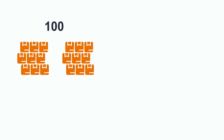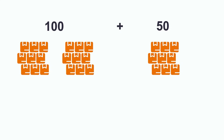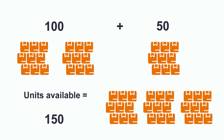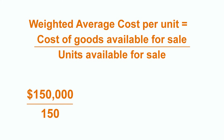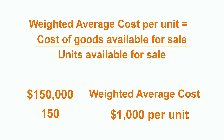For example, if the company had 100 units in inventory at the beginning of the month and purchased another 50 units during that month, their units available for sale would be 150 units. If we go back to our weighted average cost formula and take the $150,000 cost of goods available for sale and divide it by the 150 units available for sale, this gives us a weighted average cost of $1,000 per unit. This means that even though some of the individual pieces of inventory may have cost more or less than this amount, the average value of all of the inventory works out to $1,000 per unit.